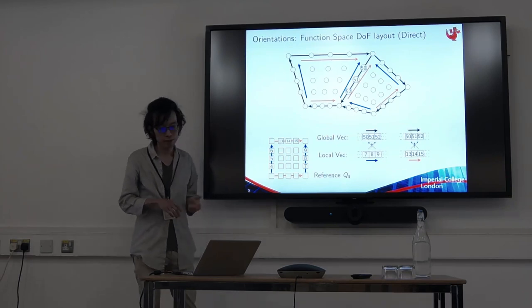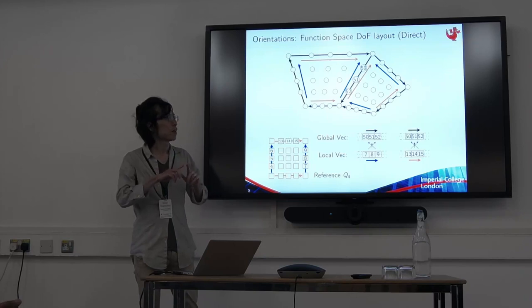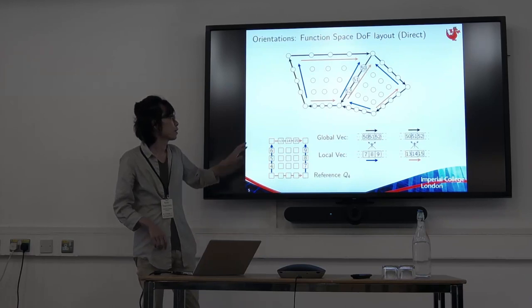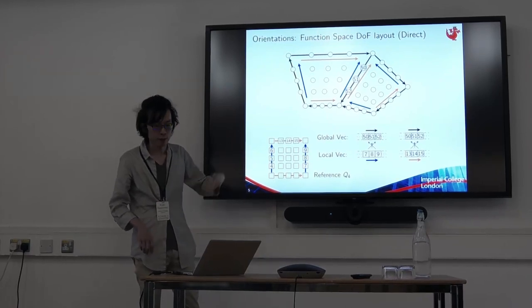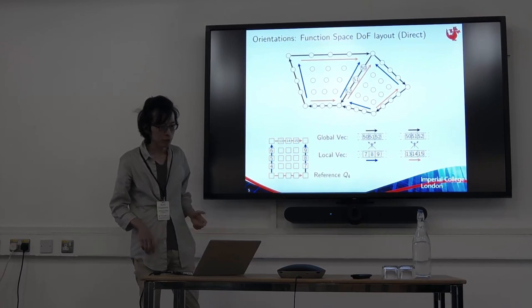For this 1D edge example, we only have to consider two permutations. But if we had, for example, a triangular facet, we would have to consider six different permutations depending on how we map the reference element to the physical element. And maybe this is something India will simplify.